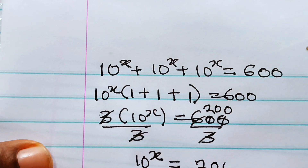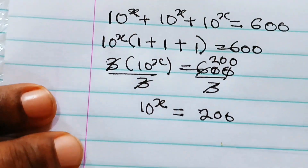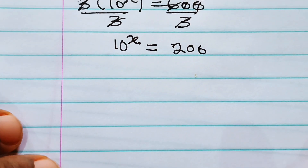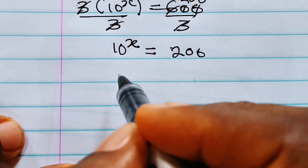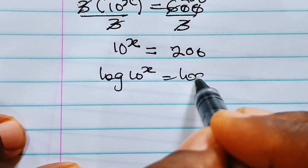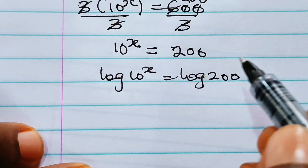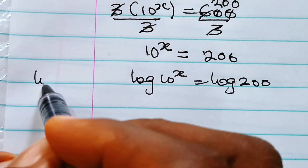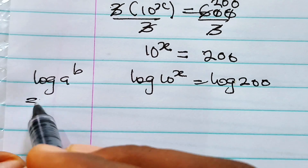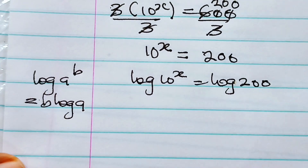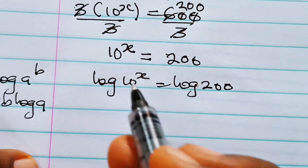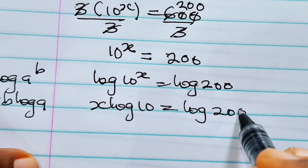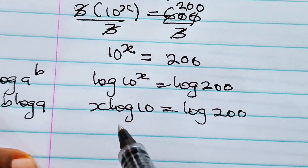Dividing by three gives us that 10 to the power of x is equal to 200. Now at this point we are going to introduce the law of logarithms to both sides of the equation. When we do that we have log of 10 to the power of x is equal to log 200. Recall that when you have log a to the power of b, this is equal to b multiplied by log a. So we can rewrite this as x times log 10 is equal to log 200.